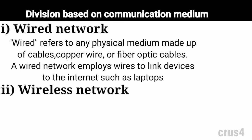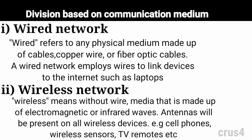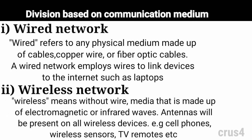A wireless network means without wire — it uses media made up of electromagnetic waves or infrared waves. Antennas and sensors will be present on all wireless devices. Cell phones, wireless sensors, TV remotes, satellite dish receivers, and laptops are all examples of wireless devices.